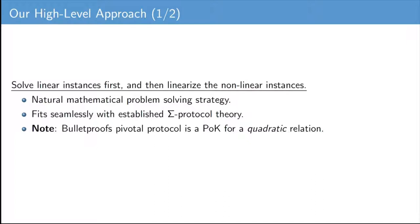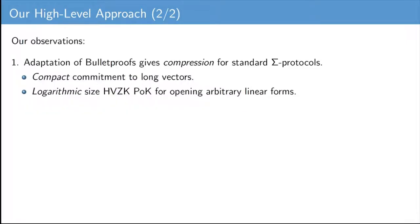In contrast, Bulletproofs' starting point is a protocol for a specific quadratic rather than linear relation. Our approach makes use of the following three observations. First, we show that an adaptation of Bulletproofs gives a compression mechanism for standard Sigma protocols. We start with a compact commitment to a long vector. Second, we show how to prove correctness of the evaluations of arbitrary linear forms in compactly committed factors, and we show how to do this with logarithmic communication. In other words, we show how to solve the linear instances of the circuit zero-knowledge problem.